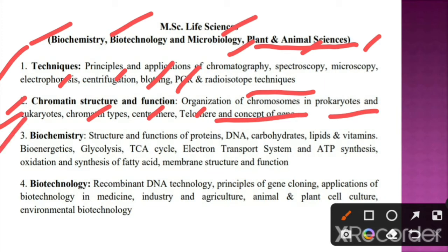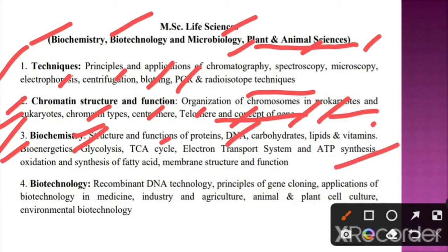Unit 3 is about biochemistry. We have to understand the structure and functions of proteins, DNA, carbohydrates, lipids, and vitamins. Further, we have to understand bioenergetics and different metabolic cycles like glycolysis, TCA, electron transport chain and ATP synthesis. We also need to study biosynthesis and oxidation of fatty acids, and membrane structure and function.